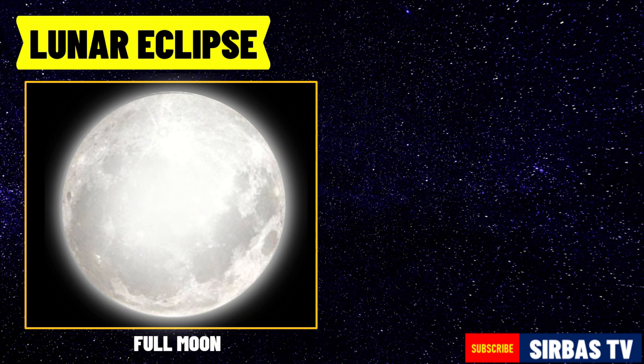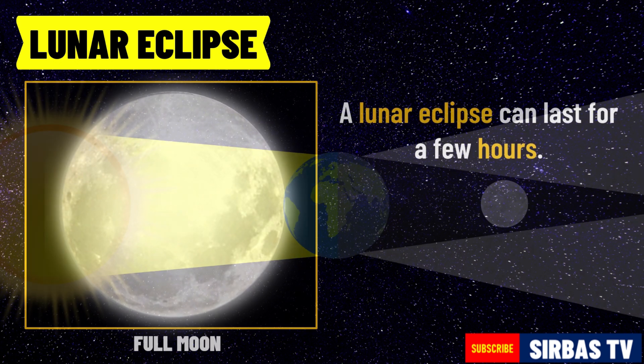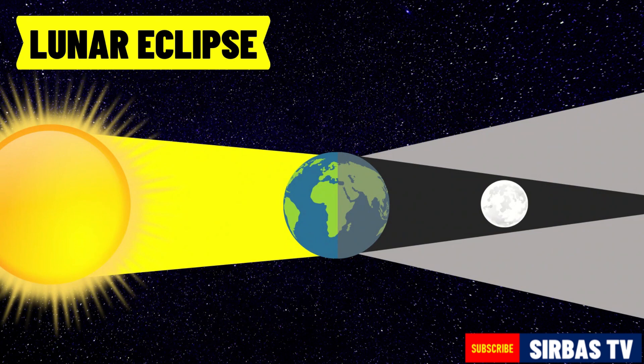Unlike solar eclipse, which only lasts for a few minutes, a lunar eclipse can last for a few hours. Moreover, unlike solar eclipse where it can only be observed from a relatively small area of earth, the lunar eclipse is visible anywhere on the night side of the earth.